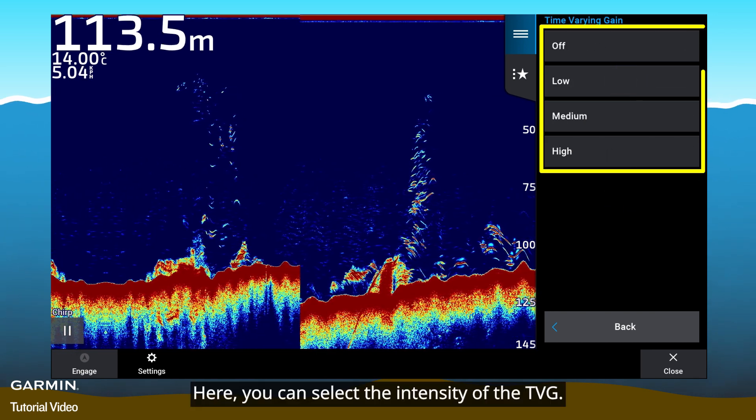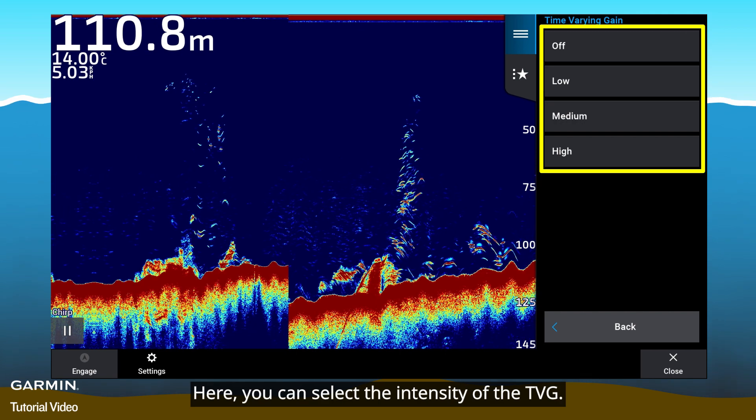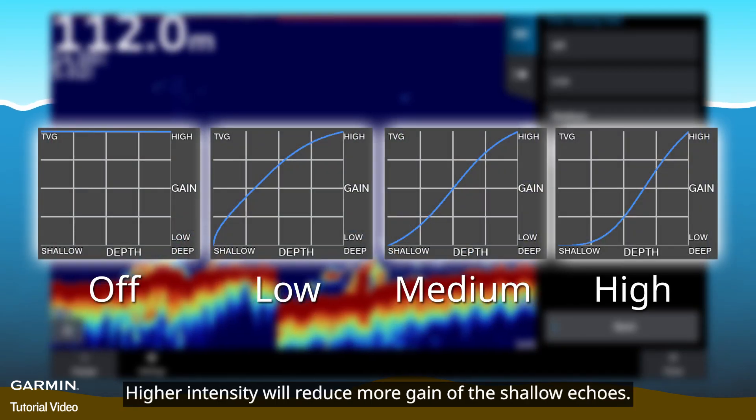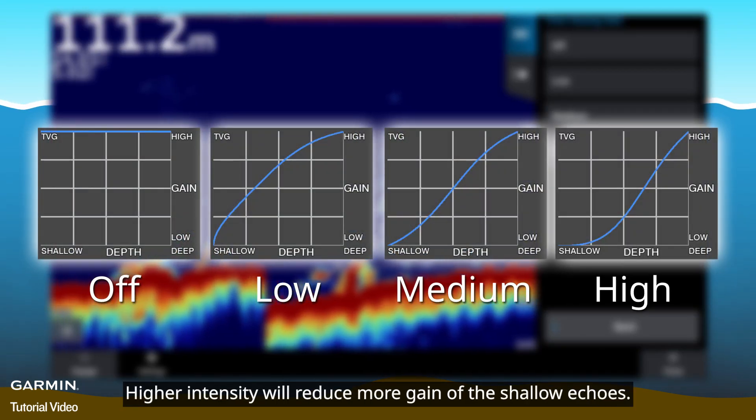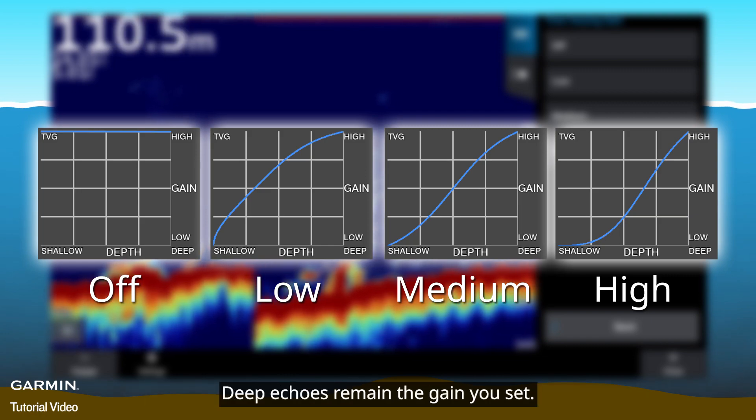Here, you can select the intensity of the TVG. Higher intensity will reduce more gain of the shallow echoes. Deep echoes remain the gain you set.